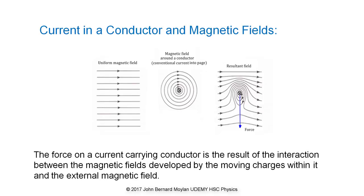The magnetic field lines tend to spread out so that they are an equal distance apart and as far apart as possible in the ground state, which is the most stable and lowest energy state of the magnetic field. This is represented in the first diagram as a uniform magnetic field. When the magnetic field surrounding a current carrying conductor is combined with a uniform magnetic field, the resultant field shown in the third diagram is produced. The magnetic field lines are compressed where they are oriented in the same direction, and spread out where they are in opposite directions.